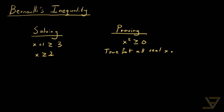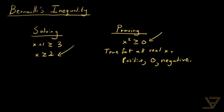We can prove it by considering the cases of positive, zero, and negative. The point is that in this case, the inequality holds over all real x, and we want to prove that's the case. Whereas in the case of solving for an inequality, we want to find the domain over which it is true. They're sort of two sides of the same coin, but we distinguish between them in problems.